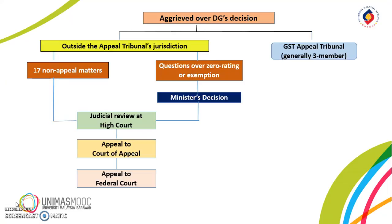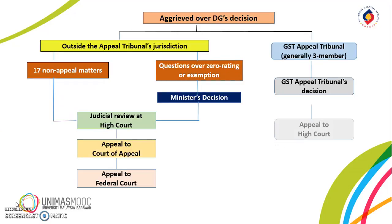For matters that can be appealed to the GST Appeal Tribunal, the appeal has to be made within 30 days using Form B, plus a fee of RM200. The Tribunal's decision is given within 60 days or time practicable from the first hearing. Either the taxable person or the DG, when aggrieved by the Tribunal's decision, may appeal to the High Court and thereafter to the Court of Appeal.